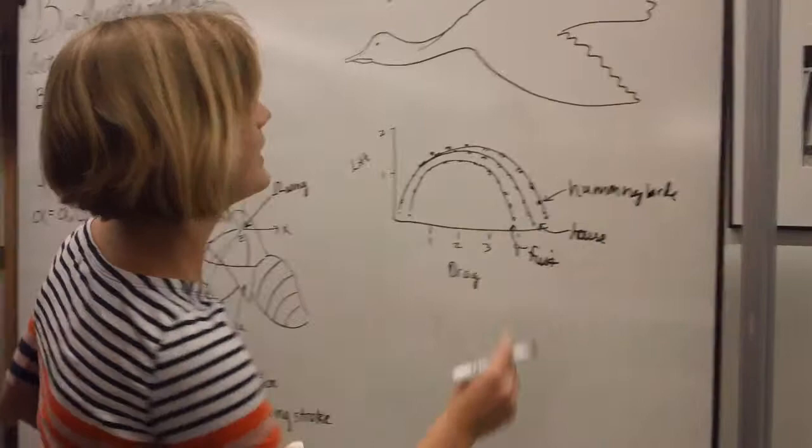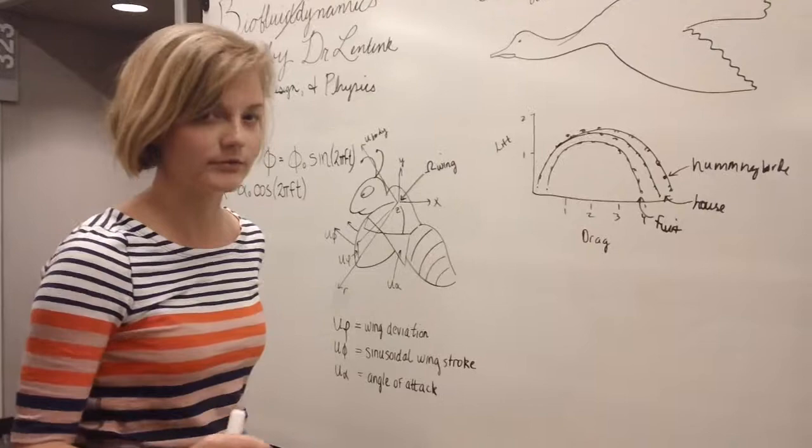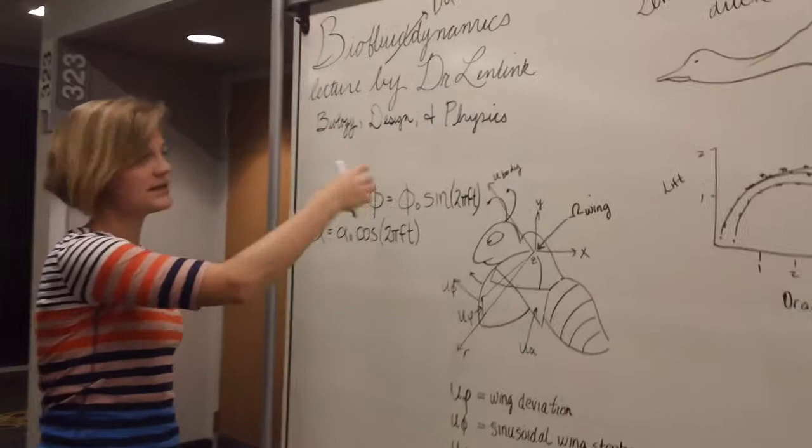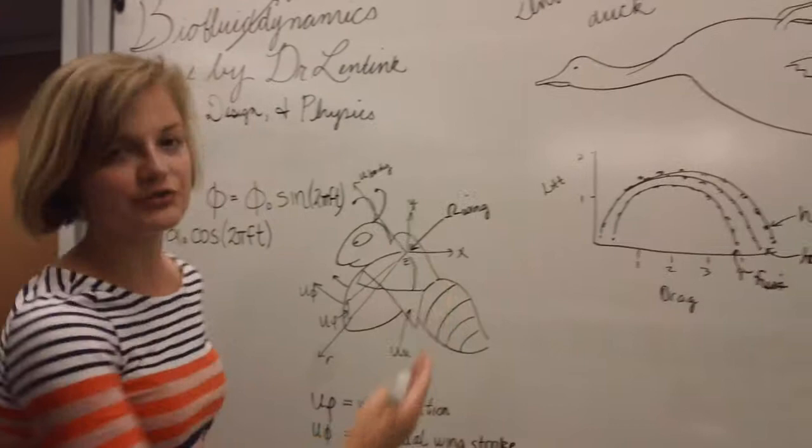Well, if you look, hummingbirds have feathers. Fruit flies and house flies obviously don't. I think they have tiny hair follicles or something. So they all have different biological components and different designs to them. The important part is the physics behind it. Why are their lift and drag so similar?